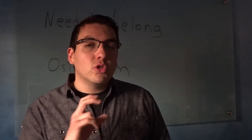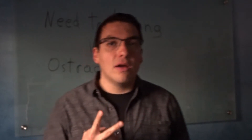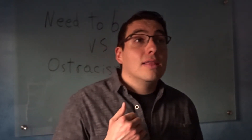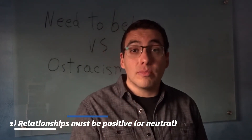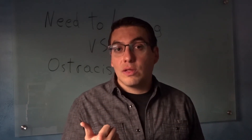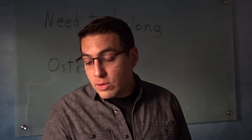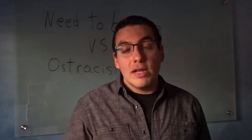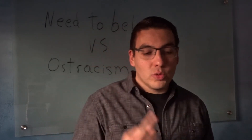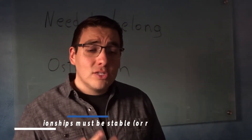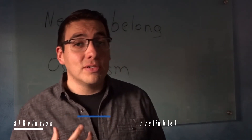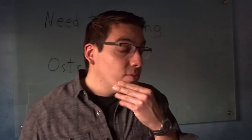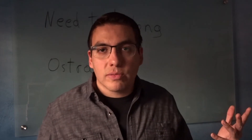Social scientists agree there are two main characteristics needed to achieve a sense of belongingness. First, relationships must be positive — not only having a relationship, but actually having a good or at least neutral one. A bad relationship won't really fulfill your need to belong. Second, relationships need to be stable. If you can't trust this person or they're inconsistently present, then it's not truly fulfilling your need to belong.